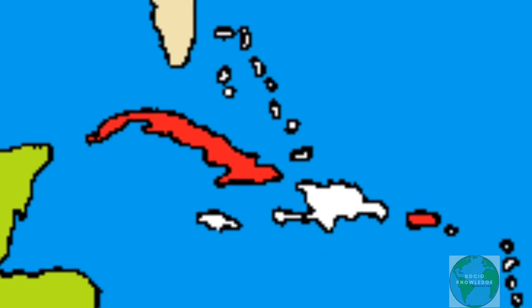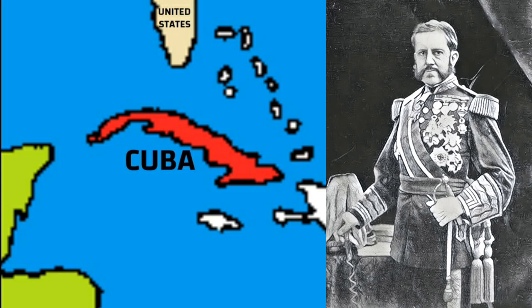The ruthless Governor General of Cuba, Valeriano Weyler, forced thousands of Cubans into areas guarded by Spanish troops that lacked basic levels of sanitation, food, and shelter. As a result, thousands of Cubans died — almost 50,000 in Havana itself.